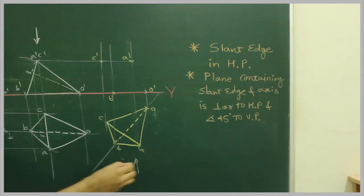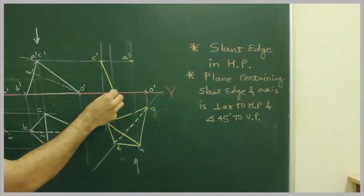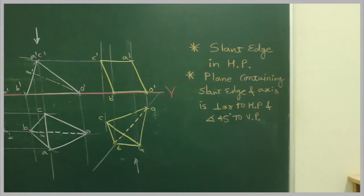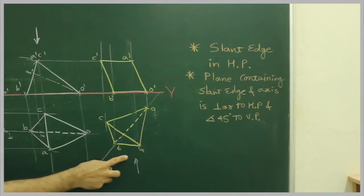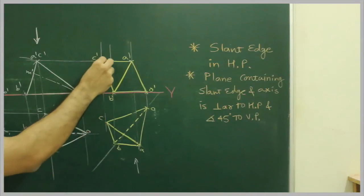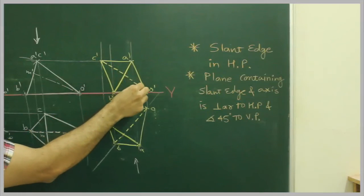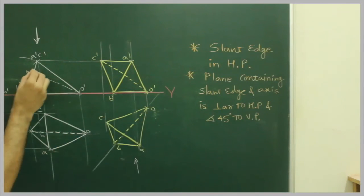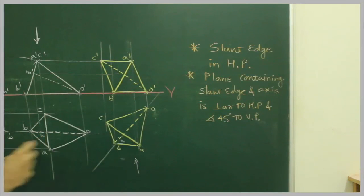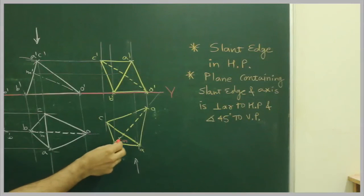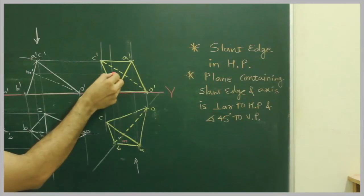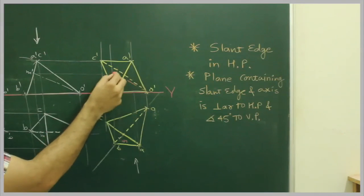Now observe B from here. First we will draw the boundary line: C dash, B dash, O dash, A dash, C dash. When you see from here, A is nearer to you so A dash to B dash will be solid, and C is away from you so C dash to O dash will be dotted. Extend M dash from here and M from here. This is the axis.